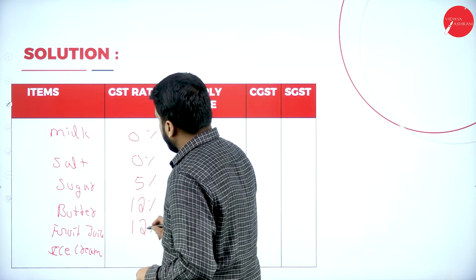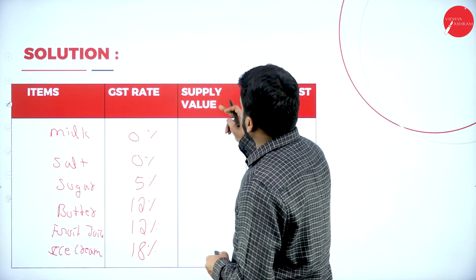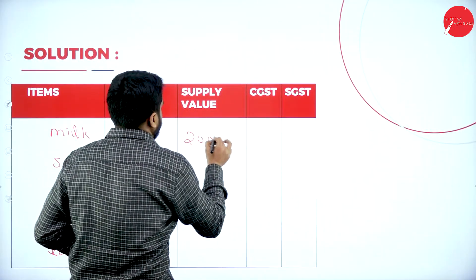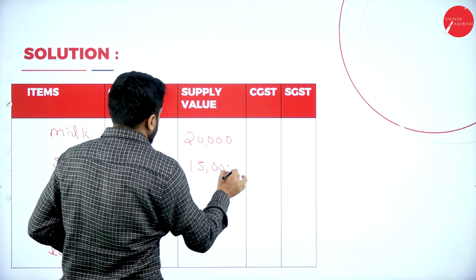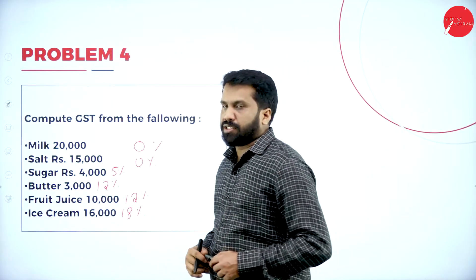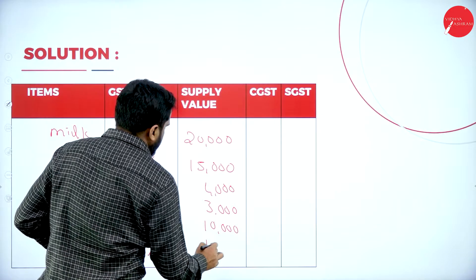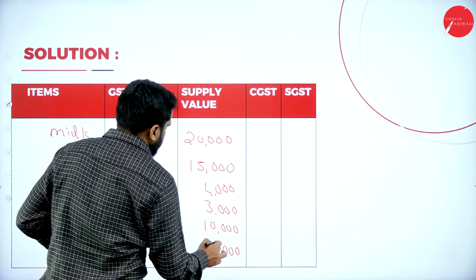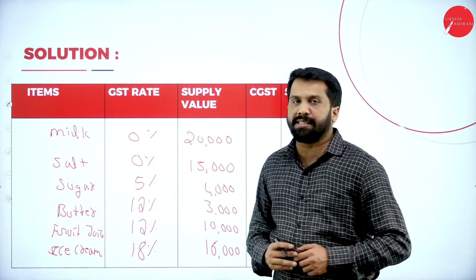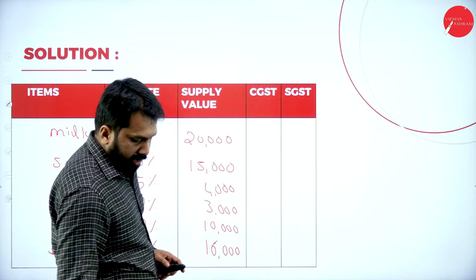Now I'll write the items one by one with their supply values. The supply values are: milk ₹20,000, salt ₹15,000, sugar ₹4,000, butter ₹16,000, fruit juice ₹3,000, and ice cream ₹10,000. Wait — let me correct: milk ₹20,000, salt ₹15,000, sugar ₹4,000, fruit juice ₹3,000, ice cream ₹10,000, and butter ₹16,000.